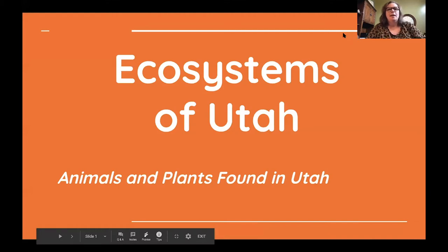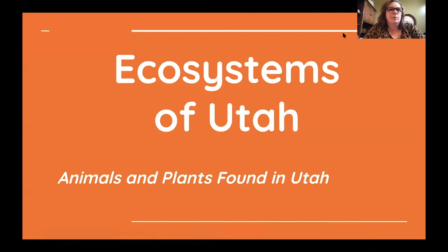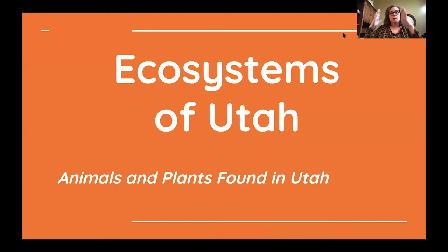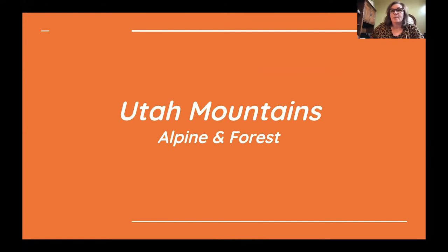Any of you that have done any kind of traveling or looking around in Utah know that we have definite and distinct differences from the mountains down to the deserts and the wetlands — three different and distinct ecosystems. The plants and animals that live there are different. We do have some overlap — some animals and plants maybe could live in more than one ecosystem — but for the most part each ecosystem has its own plant and animal life. The first one is our Utah mountains.